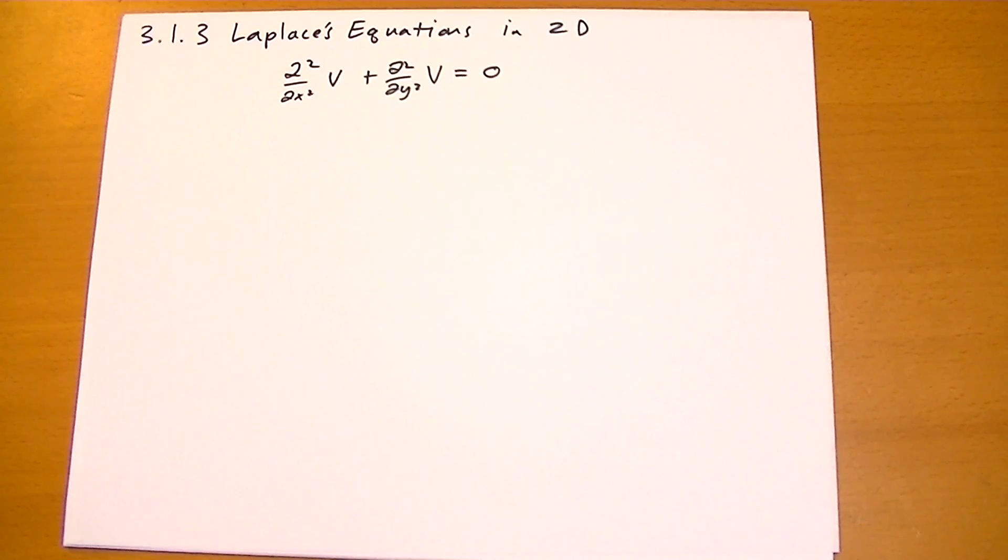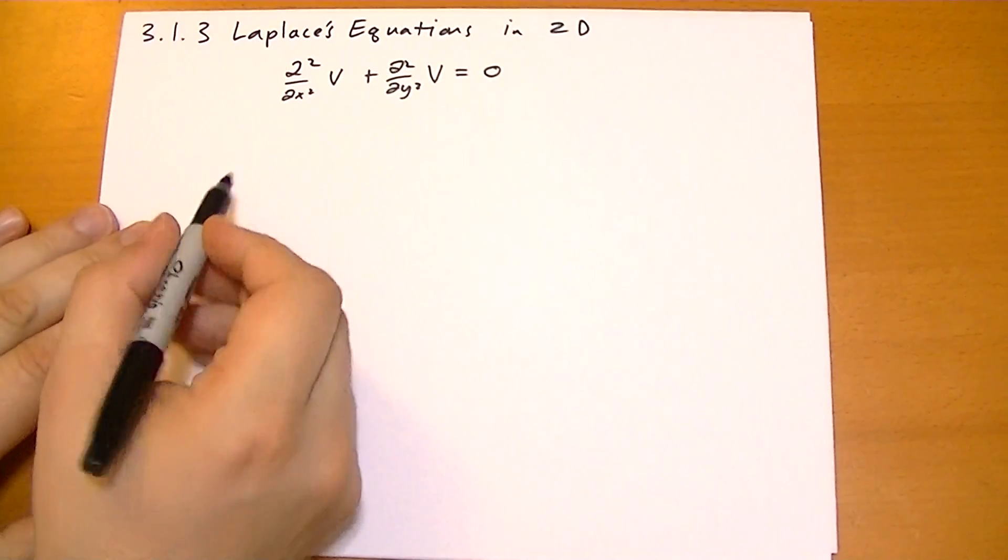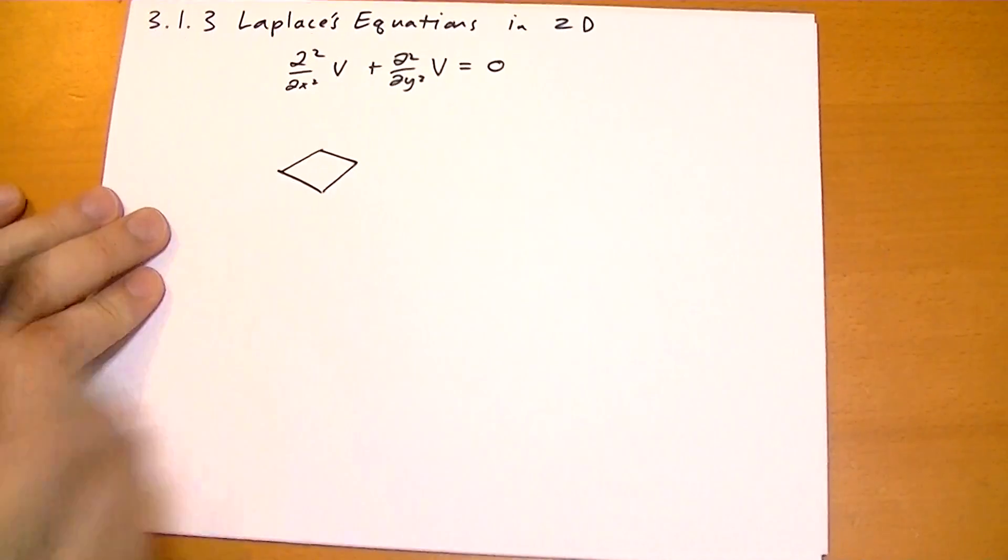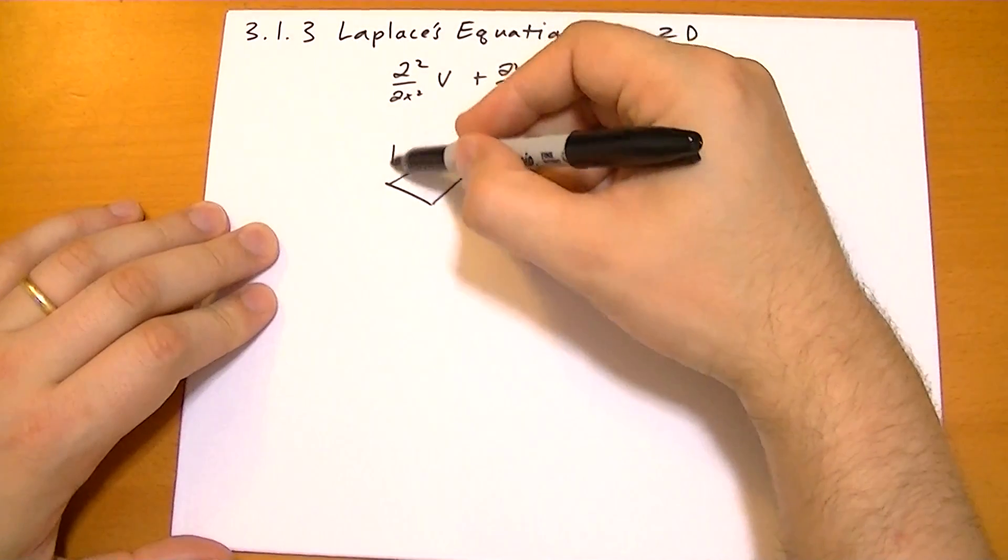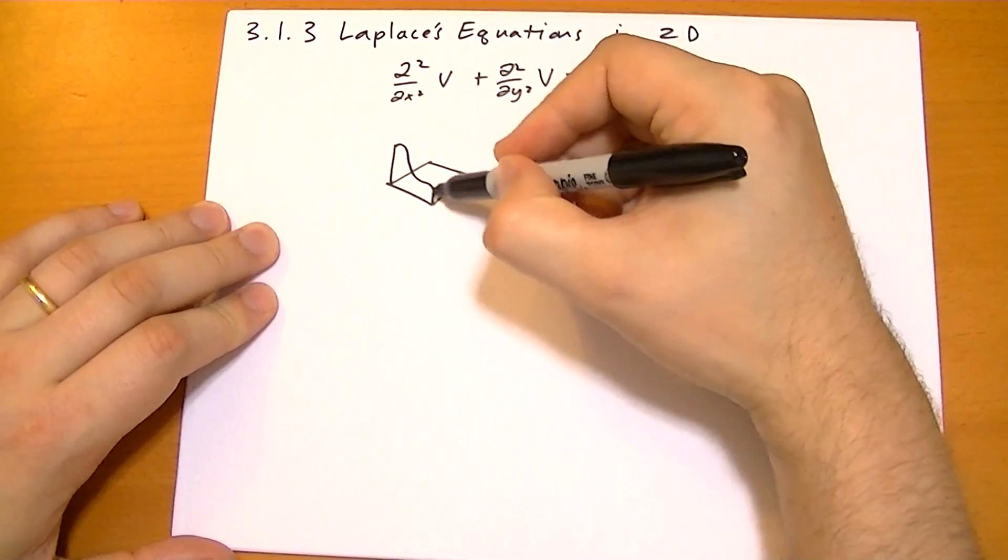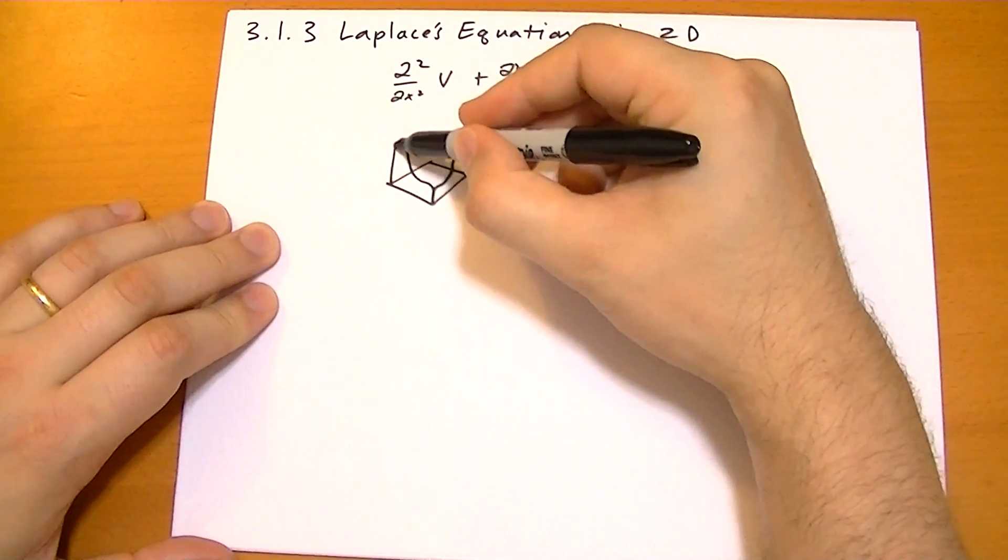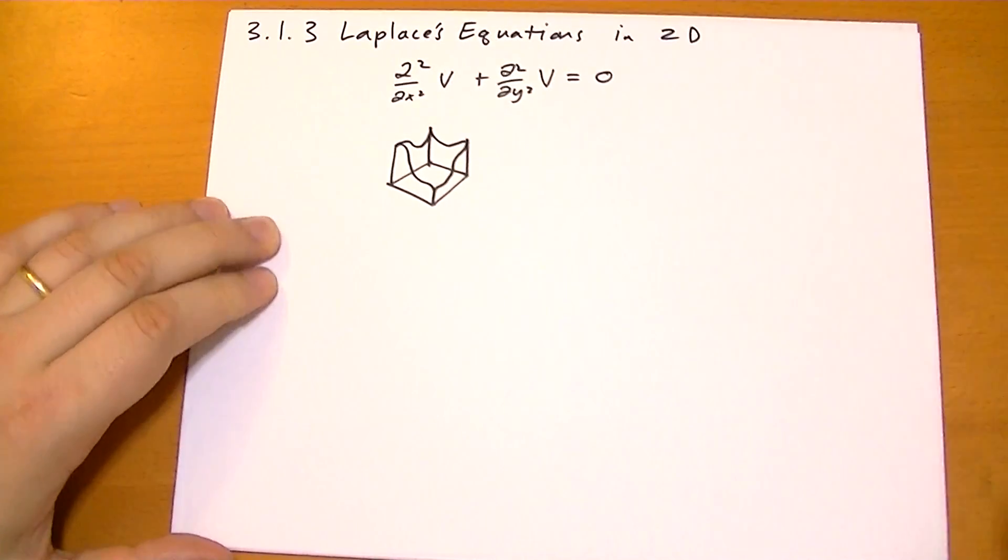And to visualize what a solution would look like, imagine that you had, let's say, a square region, and then along those edges you had different boundary conditions like that.